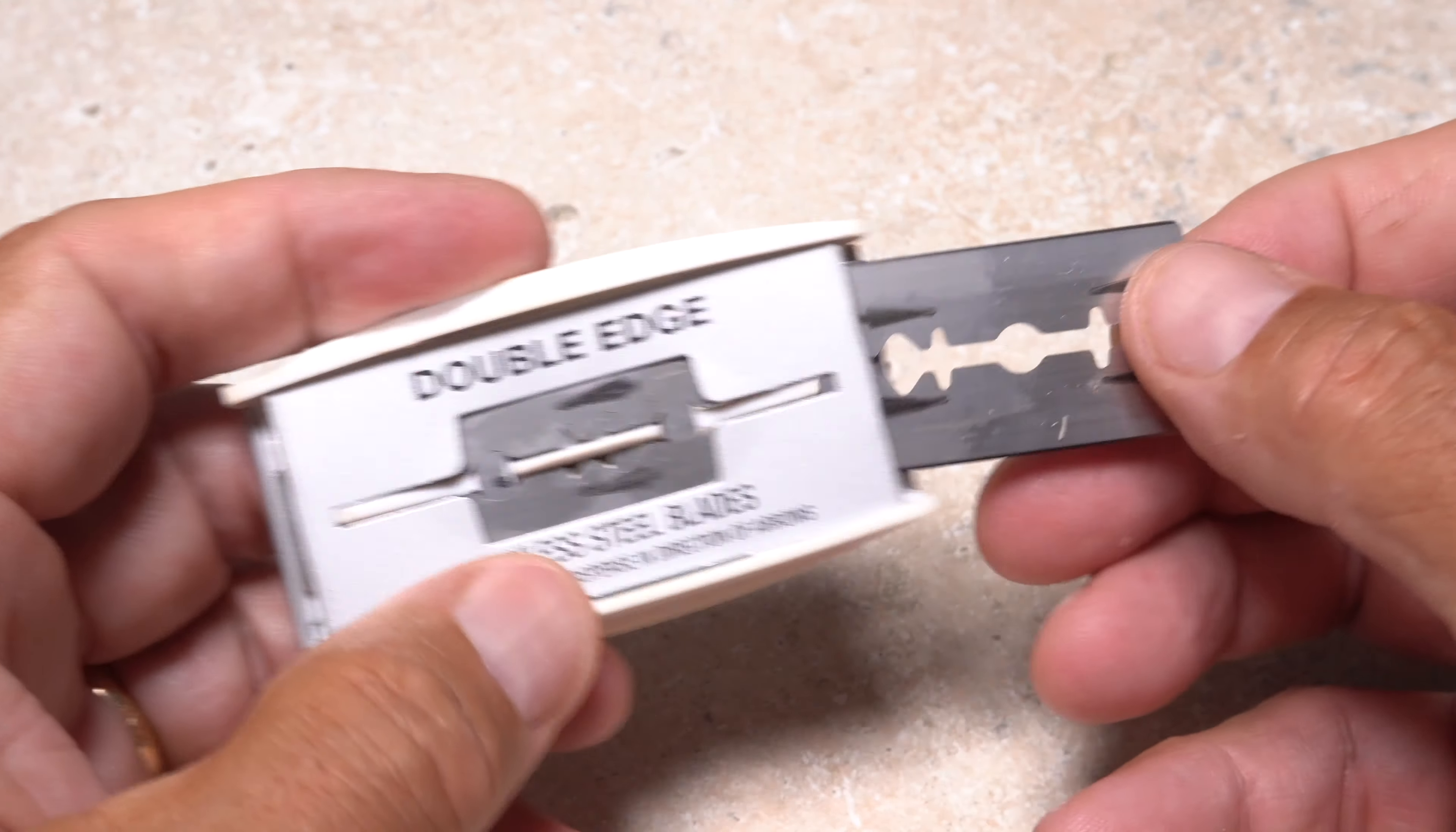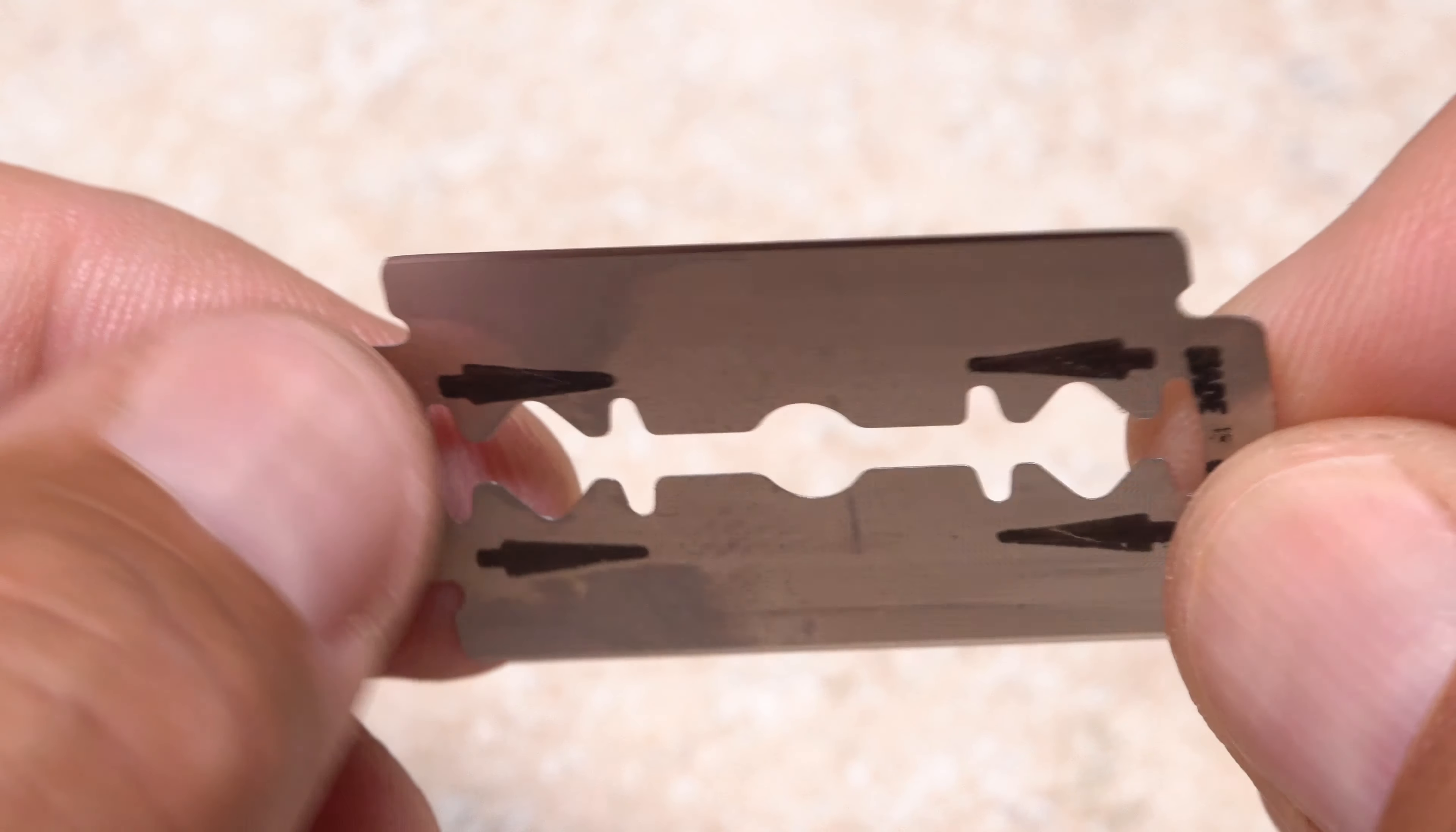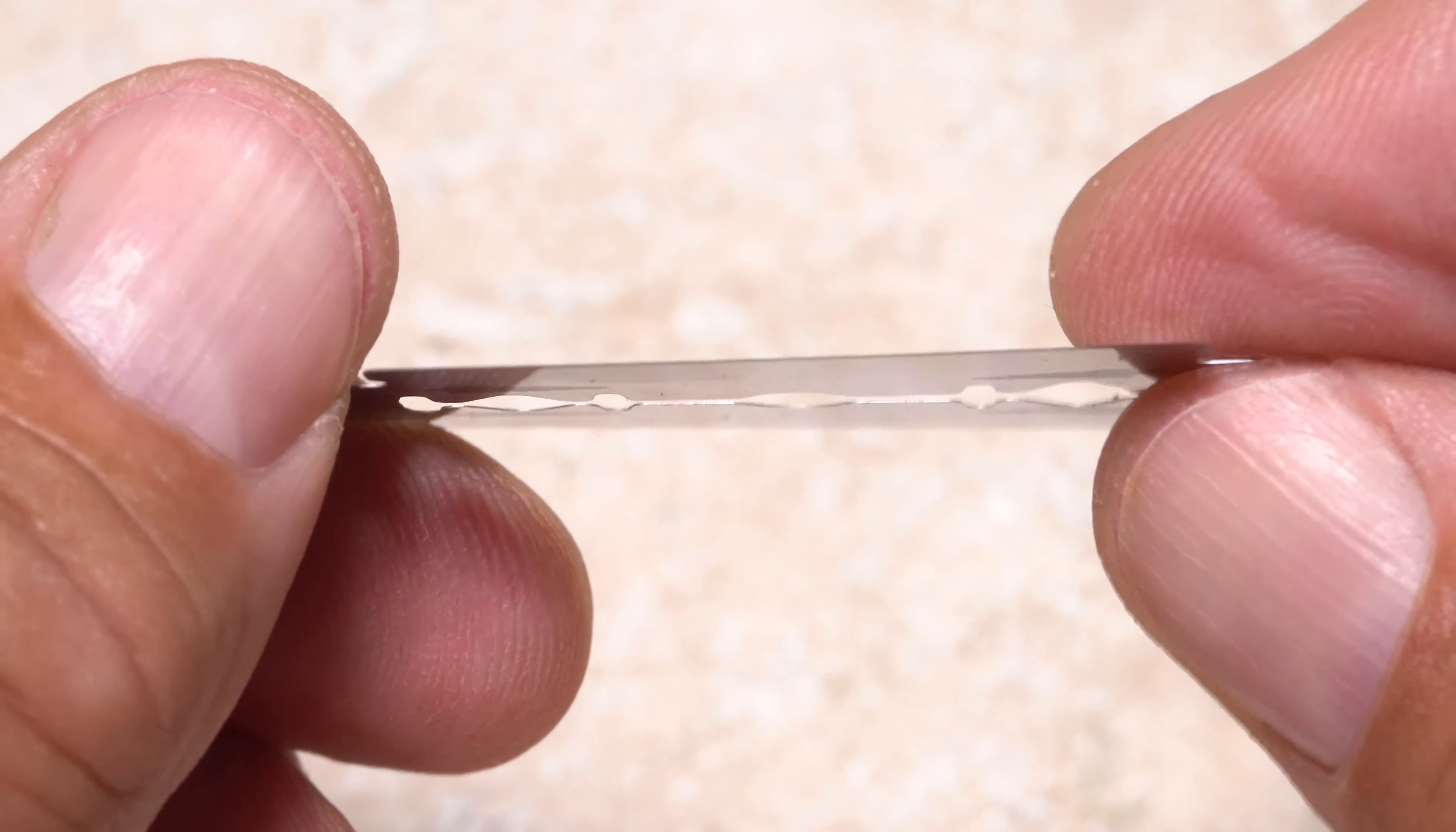Double-edged razor blades are another option for trimming deer hair bodies to shape. They're super thin and sharp, but don't hold that edge for very long.